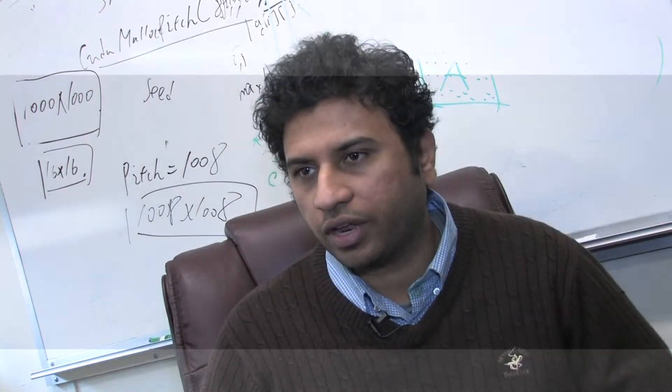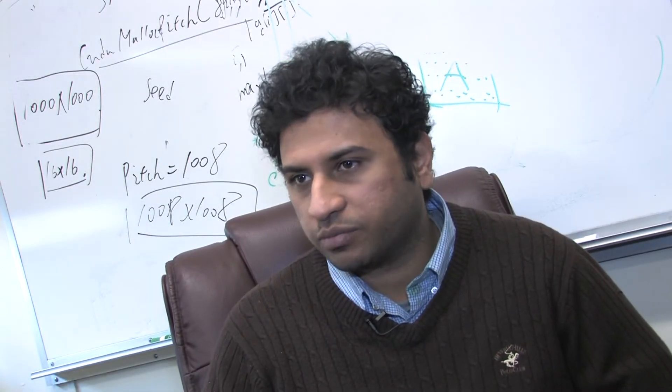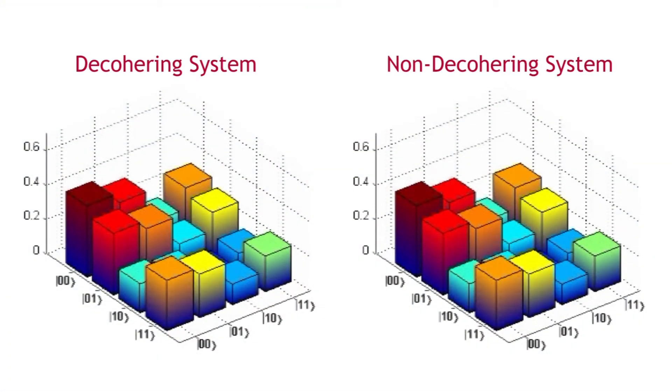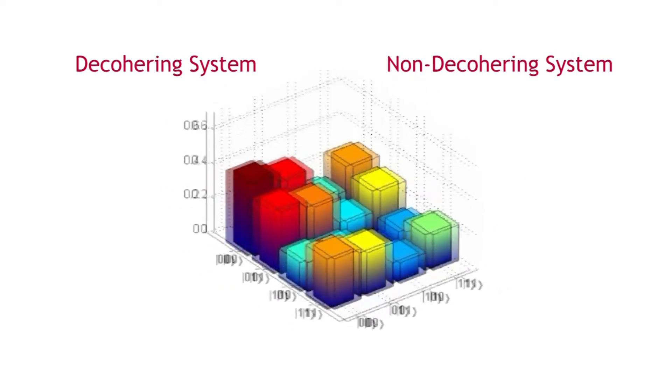We take into consideration the model of the environment and build that right into the quantum system. As you can see from the graph, the decohering system and the non-decohering system behave exactly the same, proving that decoherence does not play a major role when this strategy is applied to the quantum systems.